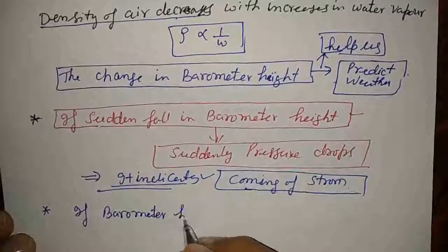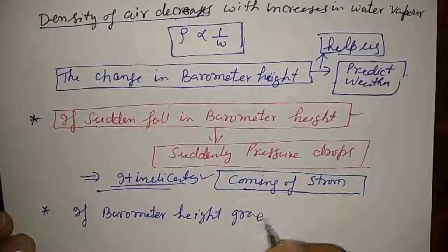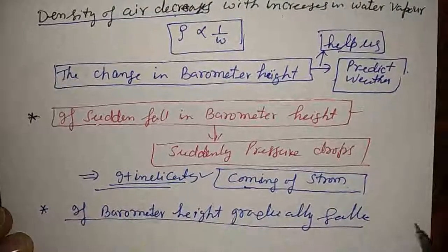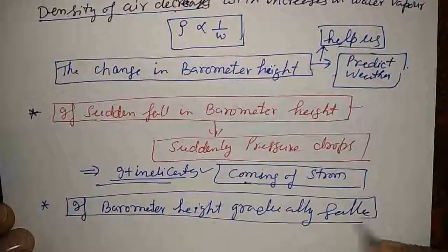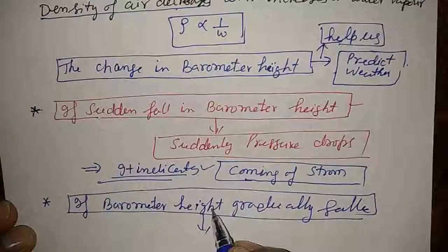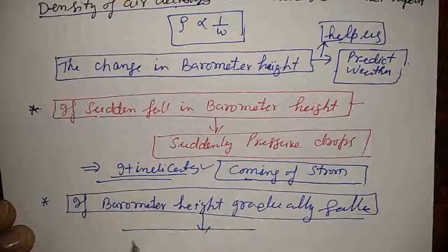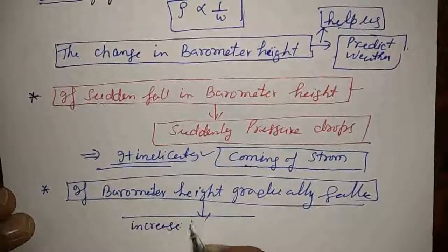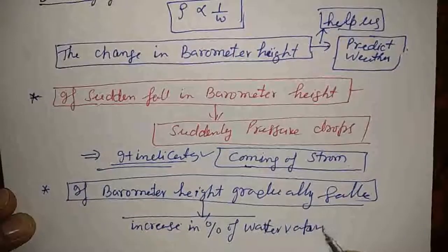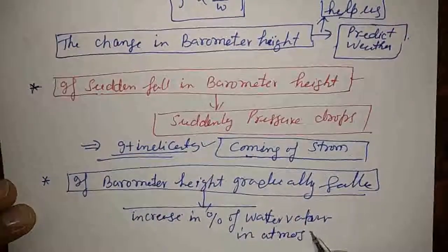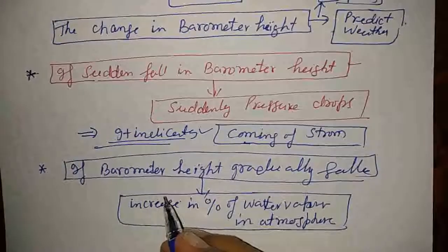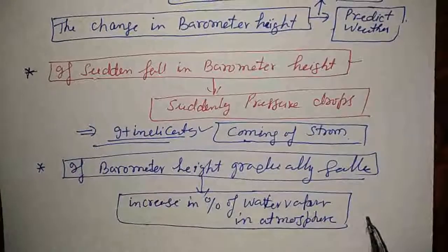In place of sudden fall, if the barometer height gradually falls — slowly moves down — it indicates a decrease in density and a decrease in atmospheric pressure. Decrease in atmospheric pressure represents a decrease in density, which means the percentage of water vapor in the atmosphere is gradually increasing. That is why the density is decreasing.